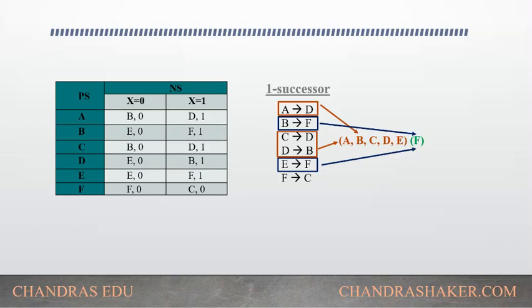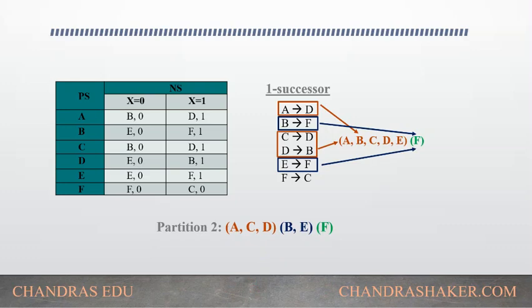Since states b and e were earlier in the same partition but are now pointing to a different partition (f), they can be subdivided. So we take a, c, d as one partition and b, e as another partition. Partition 2 is: {a, c, d}, {b, e}, and {f}.